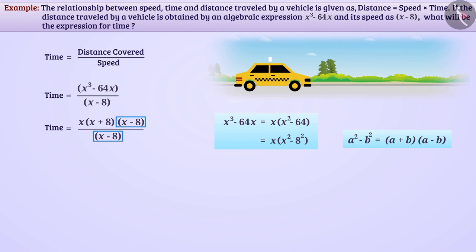Now we see that x minus 8 is common to both the numerator and the denominator. So with the cancellation method, we can cut it in both the numerator and denominator. This gives us the expression for time as x into bracket x plus 8, that is x squared plus 8x. Let's see the next example.